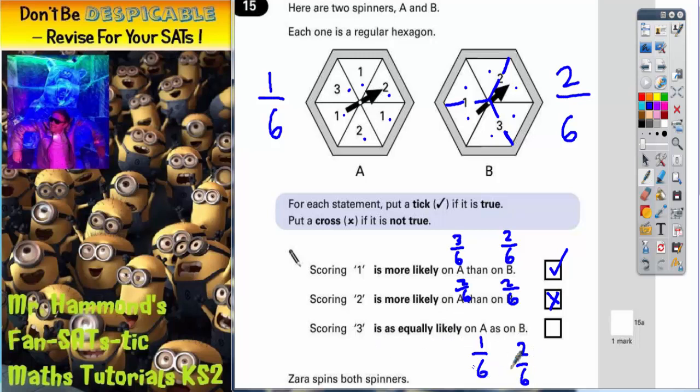Now the statement says it's equally as likely. Well, if they've got different fractions, different probabilities, different chances, then they can't be equally as likely. So that statement is also false.